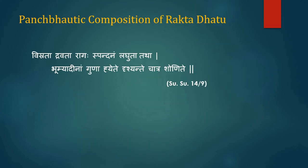Panchabhutic composition of Rakta Dhatu: Acharya Shushrut has explained the panchabhutic composition of blood as: Visrata, i.e. typical smell, is due to Prithvi Mahabhuta; Dravta or liquidity is due to Jal Mahabhuta; Raag or red color is due to Agni Mahabhuta; Spandhan or pulsation is due to Vayu Mahabhuta; and Laguta or lightness in blood is attributed to Akasha Mahabhuta.